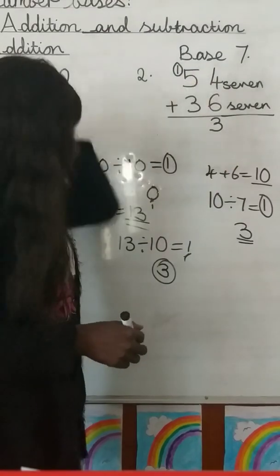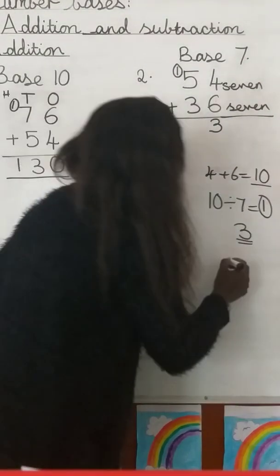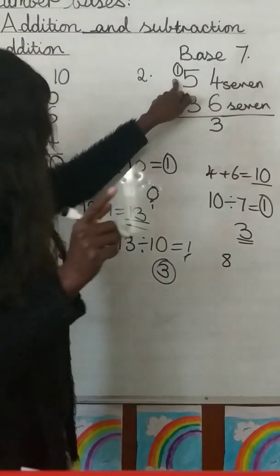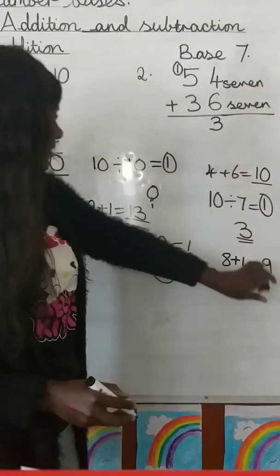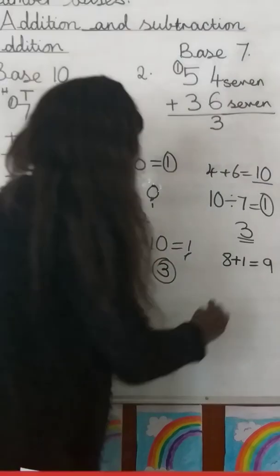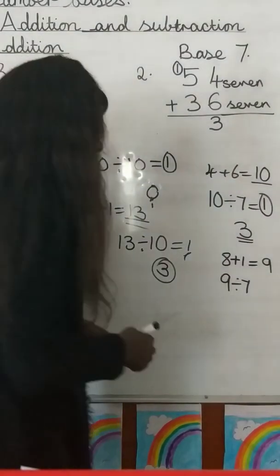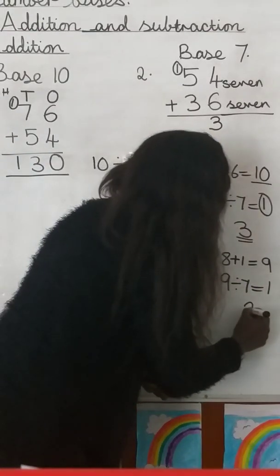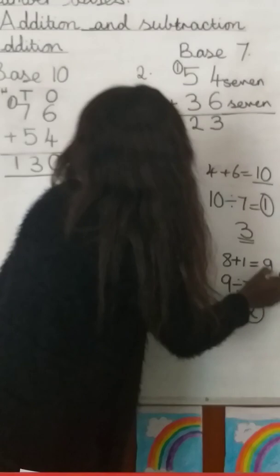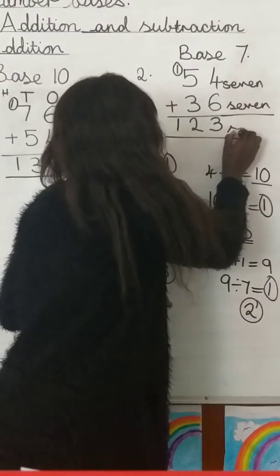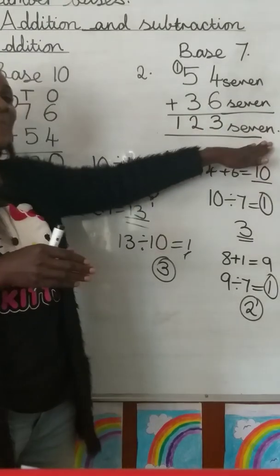Now move to the next column: 5 plus 3 gives 8. Remember you carried the 1, so 8 plus 1 gives 9. In base 7 we don't write 9 directly — we divide 9 by 7, which gives us 1 with a remainder of 2. The remainder 2 is written there. There are no more numbers to add, so write the carried 1 down. Write your base 7 label. That's how you add in base 7.